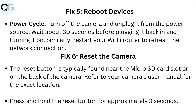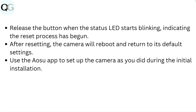Fix 6: Reset the camera. The reset button is typically found near the microSD card slot or on the back of the camera. Refer to your camera's user manual for the exact location. Press and hold the reset button for approximately 3 seconds, then release when the status LED starts blinking, indicating the reset process has begun.